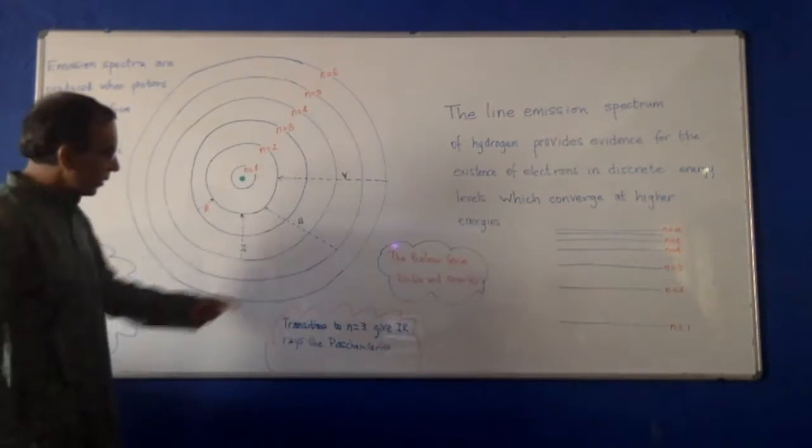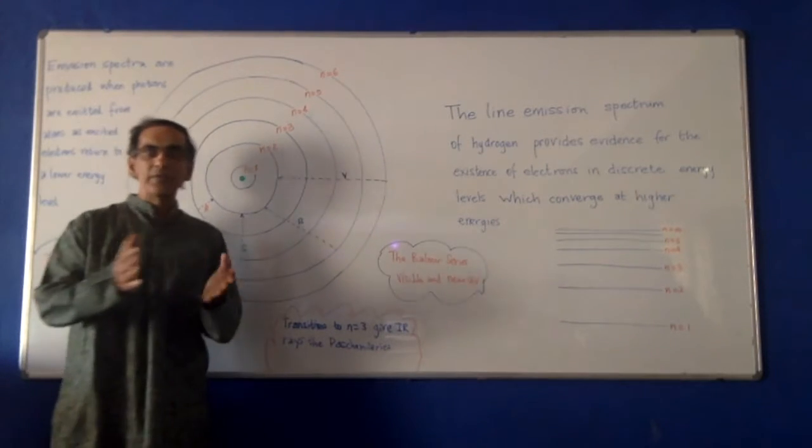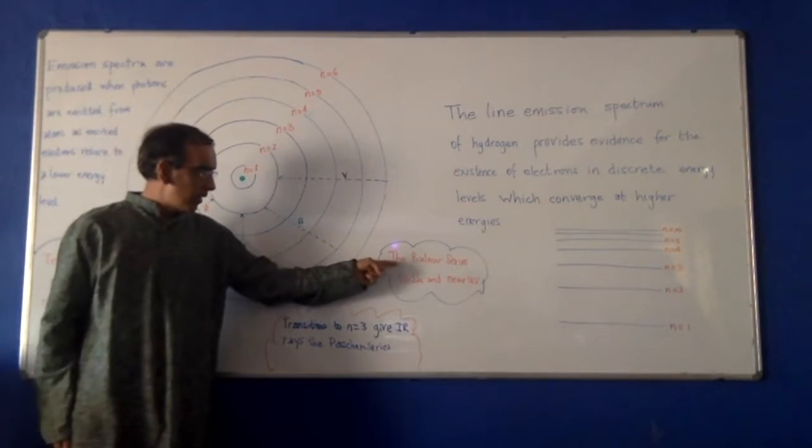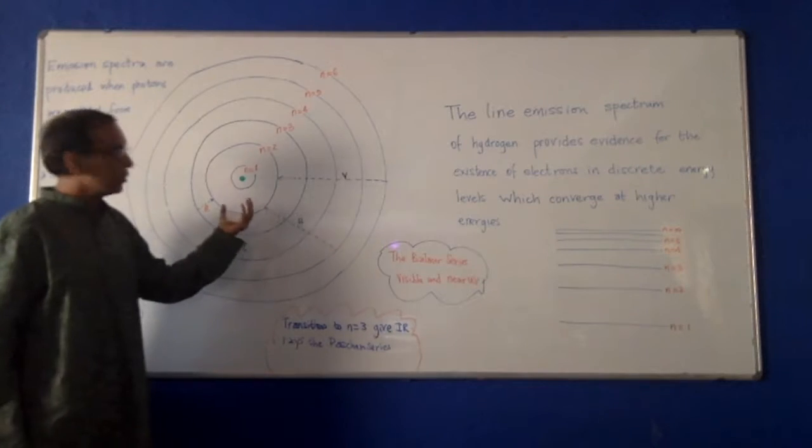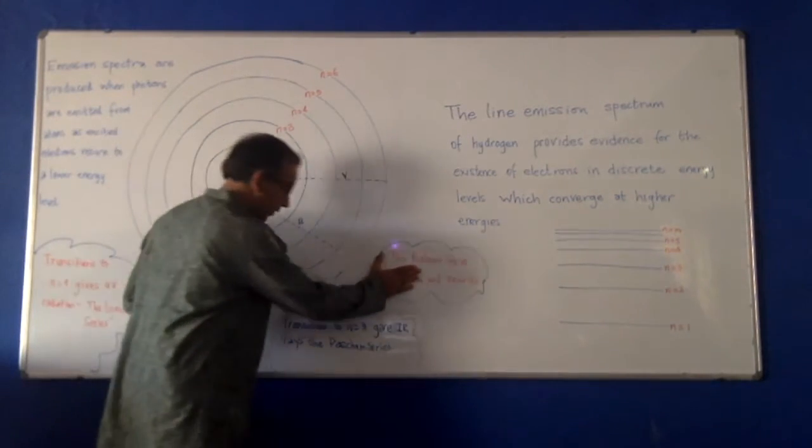Also referred to as the Balmer series of lines. IB students don't have to characterize this by the name of the Balmer series, but we have to be able to explain where the four lines come from. So this is called the Balmer series.